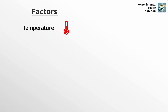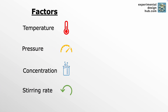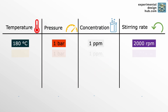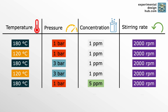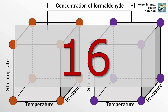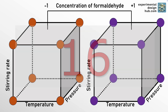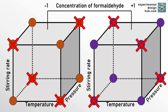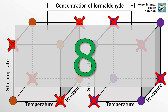If we have factors like temperature, pressure, concentration and stirring rate to test at different levels, a full factorial design would test every possible combination of these four factors. If we assume two levels for each factor, we get a total of 16 individual experiments that we need to run. But that is not necessary — we can get the same information out of only eight runs by running a carefully selected subset of these 16 experiments.